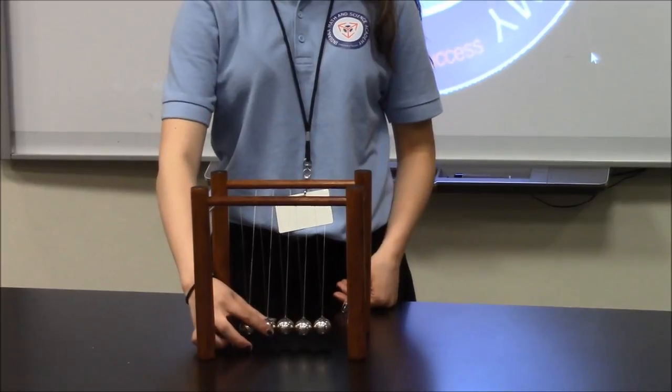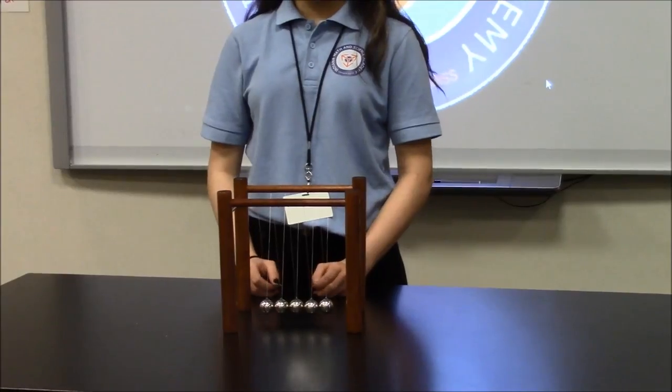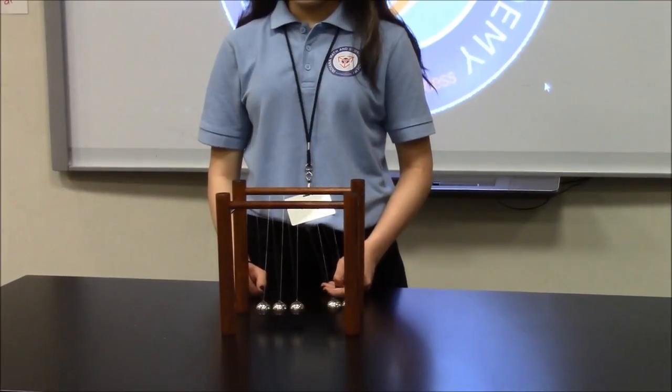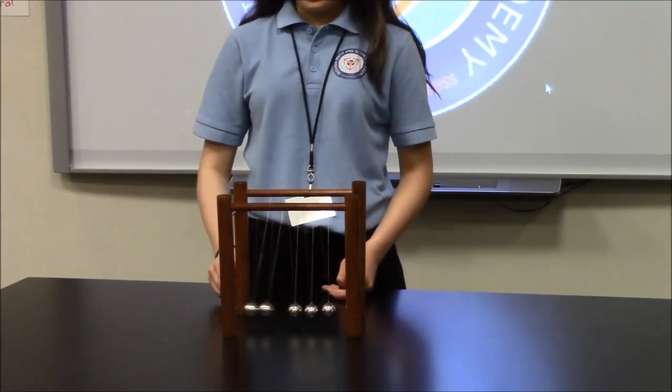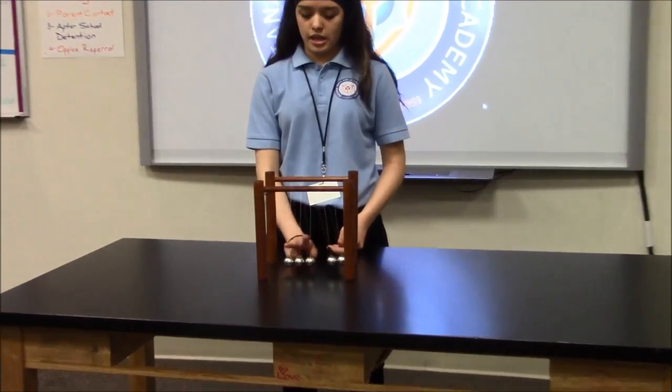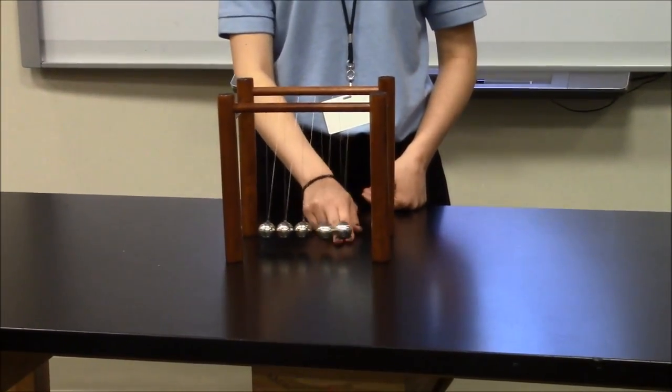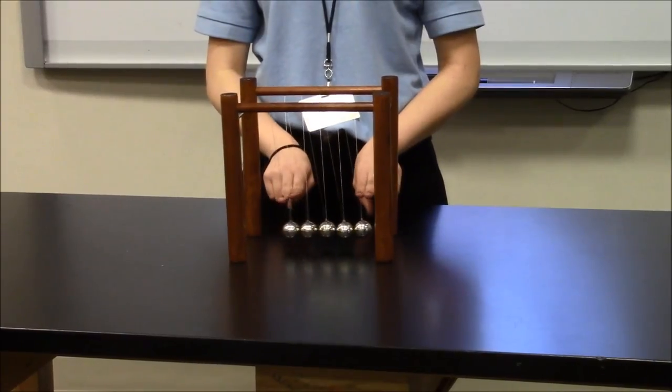This all has to do with momentum. As balls collide, they keep momentum. And as two go over here, it has two masses. And then when it collides, it passes the two masses over here. That's why they collide evenly.